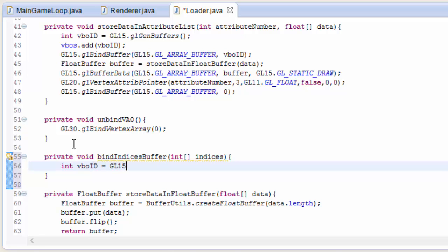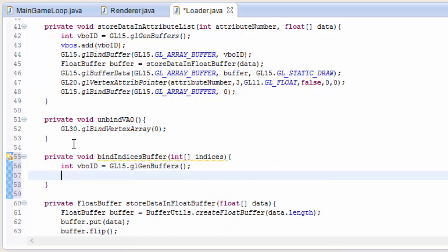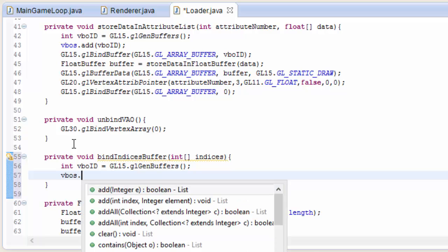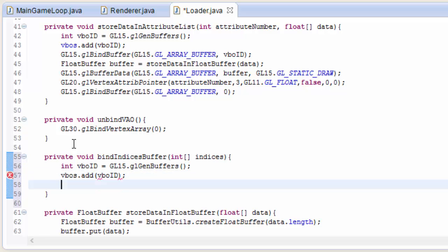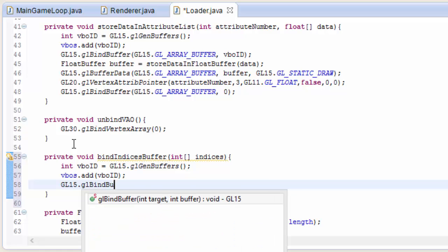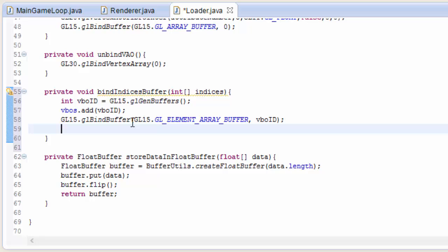So this method will take in the array of the indices that we want to load up into the indices VBO. And it starts off just like any other VBO. We need to create an empty VBO by calling glGenBuffers, and that's going to return the ID of the empty VBO. And we're going to add that to the list of VBOs that we made last time, so that it gets deleted when we close the game. Now we need to go ahead and bind the buffer because we want to use it. So glBindBuffer, that will bind the VBO. Now we need to specify the type of VBO, and this is different from last time because this isn't data, this is an element array buffer. And that tells OpenGL to use it as the indices buffer. And then we put the ID of the VBO that we want to bind.